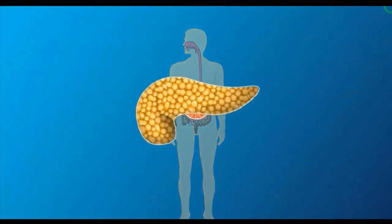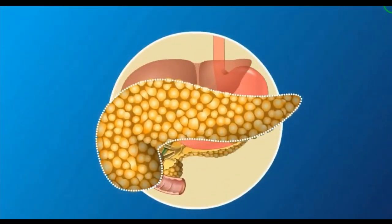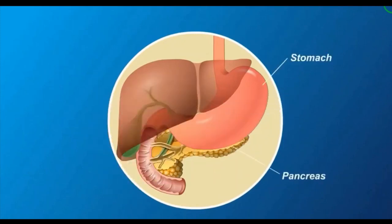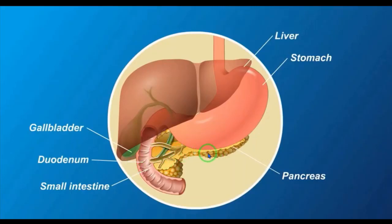Pancreas. This pancreas is an important organ in the digestive system. It is an elongated yellowish gland situated in the loop of stomach and duodenum. The stomach and the duodenum — in this region that pancreas is located.